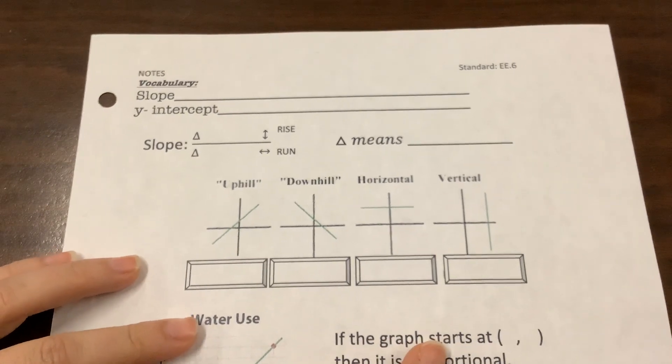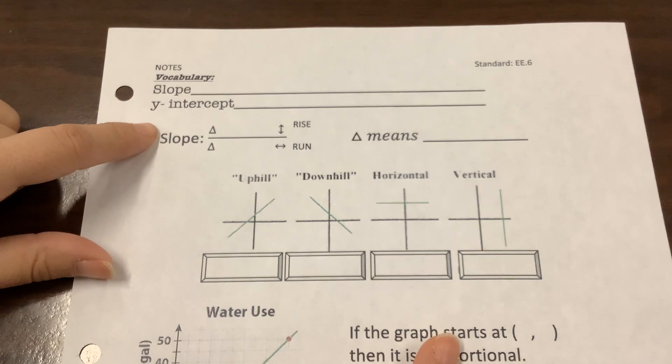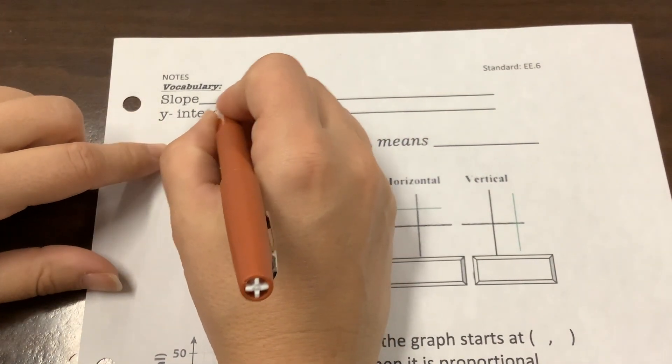All right, so these are the notes for week two. We are starting with slope and y-intercept. First of all, the slope, that is the steepness of a line.